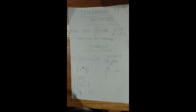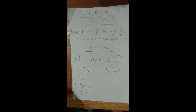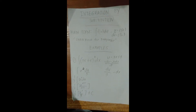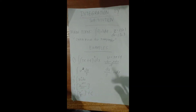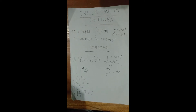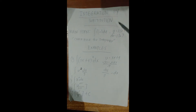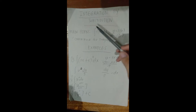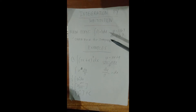Okay guys, so this will be the last part of our fourth video. Let's have a quick review of what we discussed last time. We started with integration by substitution, which has the main form: the integral of a function of u, du. This is also called the chain rule for integration.